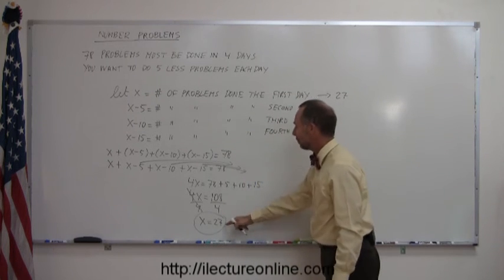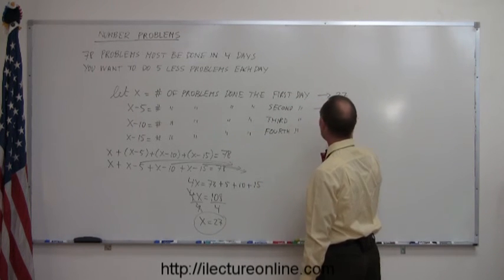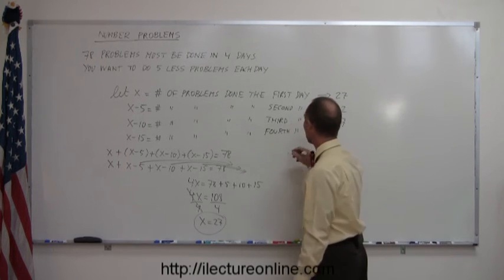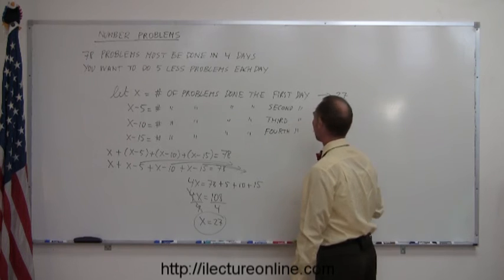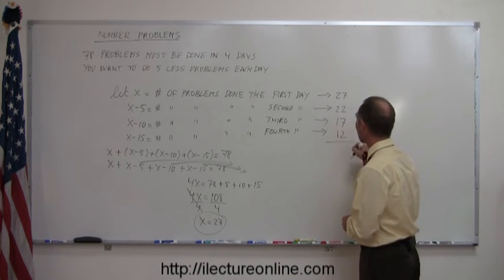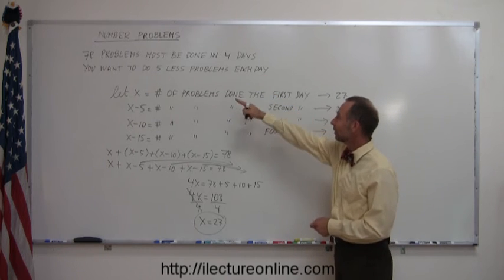On the second day you can do 5 less, or 22 problems. On the third day, 10 less, or 17 problems. And on the fourth day, 15 less, or 12 problems. And again, to make sure that we did this correctly, let's add these all together. That should add up to 78.